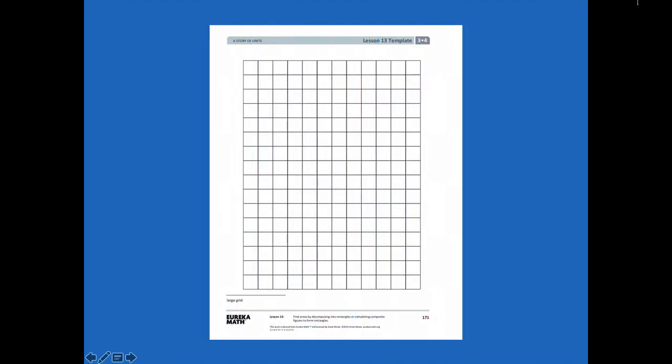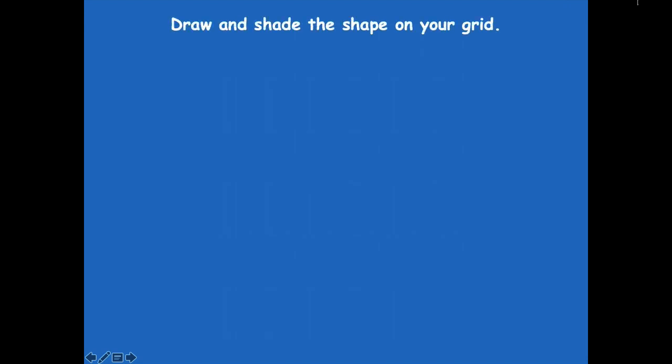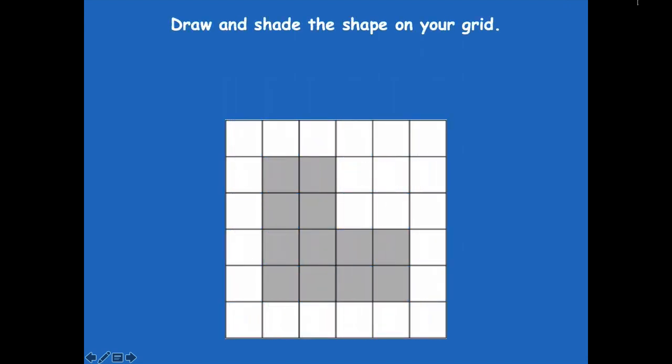Grab your template for this part. You're going to draw and shade the shape on your grid — an L-shaped figure. Make sure it's exactly the same: 4 across the left, 4 across the bottom. Draw out those little squares and shade that in. Go ahead and pause the video, do that part, then click play when you're ready for the next step.